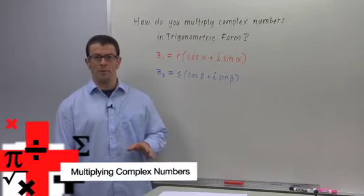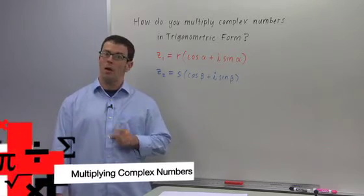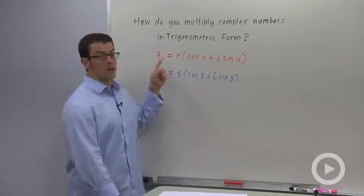I'm going to assume that you already know how to multiply complex numbers when they're in rectangular form, but how do you multiply them when they're in trigonometric form?